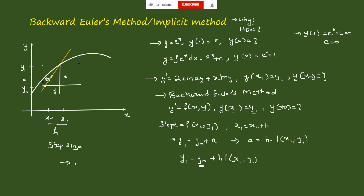The Backward Euler's method formula is: y(i+1) = y(i) + h · f(x(i+1), y(i+1)). This is the basic formula of the Backward Euler's method, by which we can find y(i).